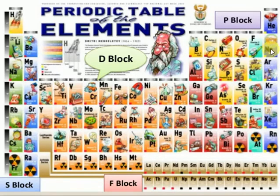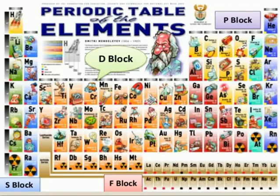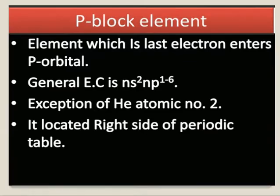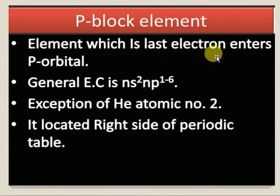The noble gases are Helium, Neon, Argon, Krypton, Xenon, and Radon. Radon is a radioactive element. We are going to discuss the Helium and Neon components. First, remember one important point: P-block elements are those in which the last electron entered the P orbital.